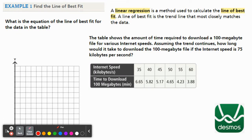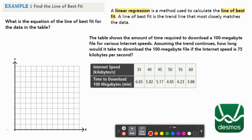Let's talk about finding an equation for the line of best fit on the next slide. So we have this problem here. It says, what is the equation of the line of best fit for the data in the table? First of all, let's graph this data. This is going to be our X, this internet speed in kilobytes per second, and this is our Y, time to download a 100 megabyte file in minutes. This is our speed in kilobytes per second, and this is our time in minutes.